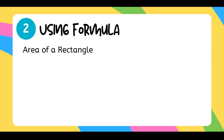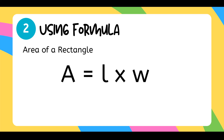Let's proceed to the second method in finding the area of a rectangle. The second one is by using a formula. The area of a rectangle formula is: Area is equal to length times the width. A symbolizes the area, L represents the length, and W represents the width.